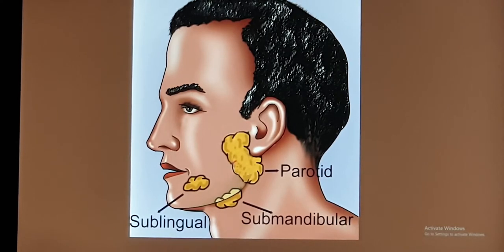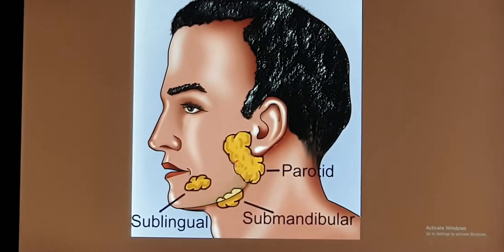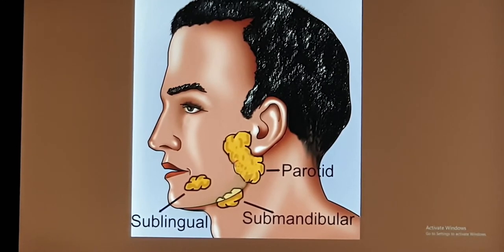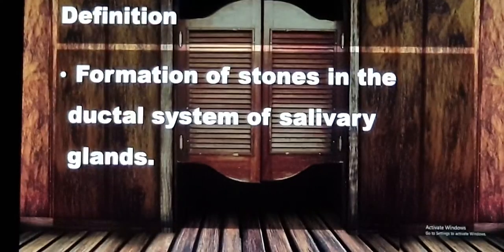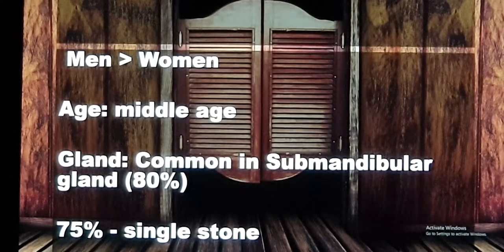Calculus or stone formation is most common in the submandibular gland. Now coming to the main topic — Acute Sialolithiasis — which means formation of stones or calculus in the ductal system or the gland proper of the salivary gland. It is more common in men, especially in the middle age group. Among the three glands, it is very common in the submandibular gland, approximately 80 percent.